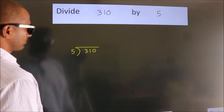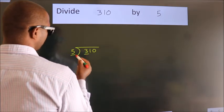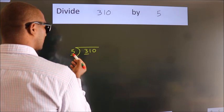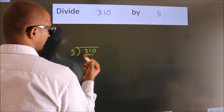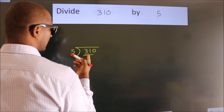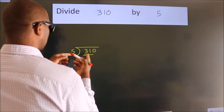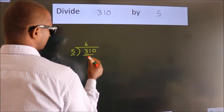Next. Here we have 3, here 5. 3 is smaller than 5, so we should take 2 numbers, 31. A number close to 31 in the 5 table is 5 times 6, 30.